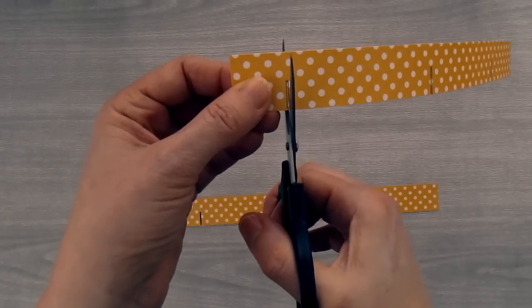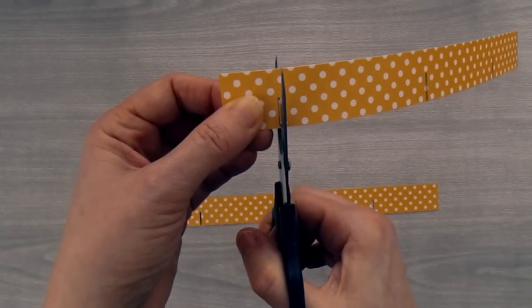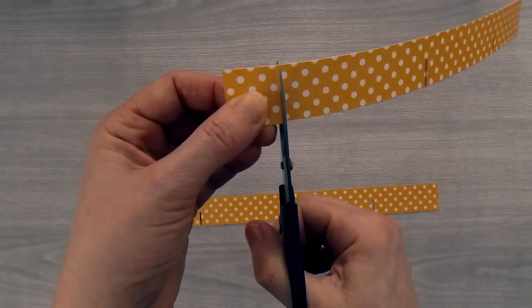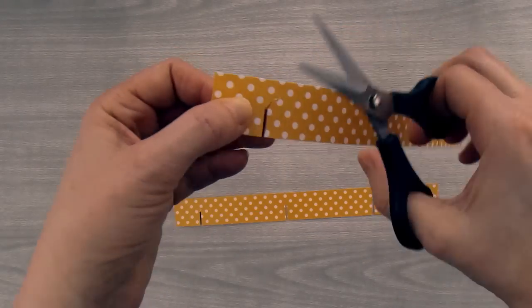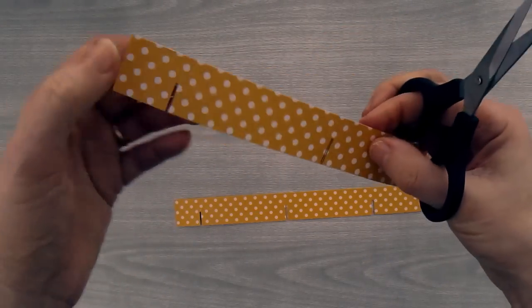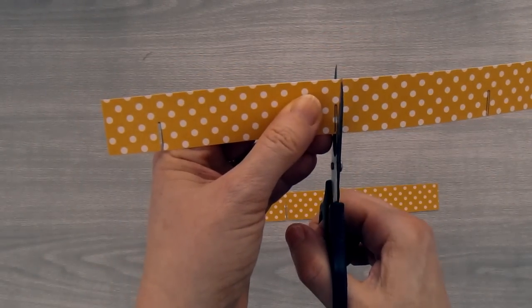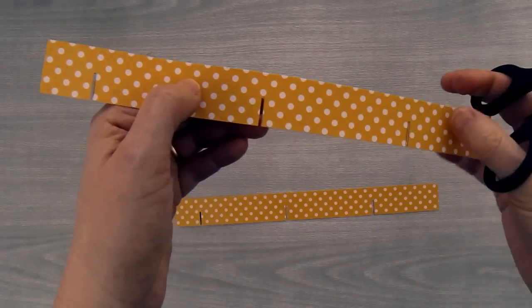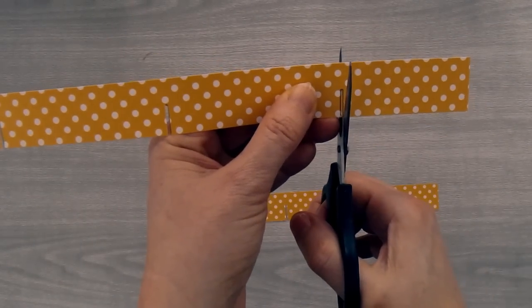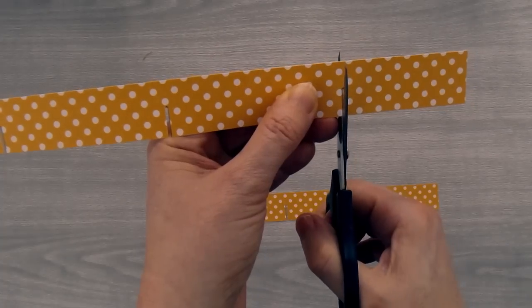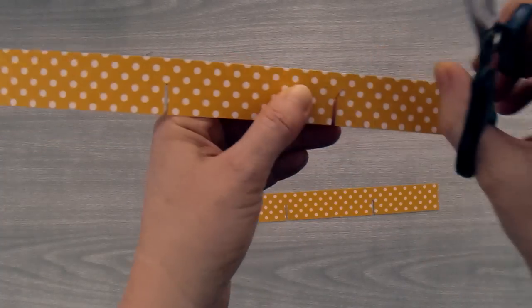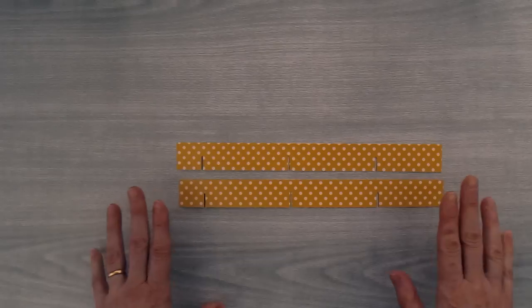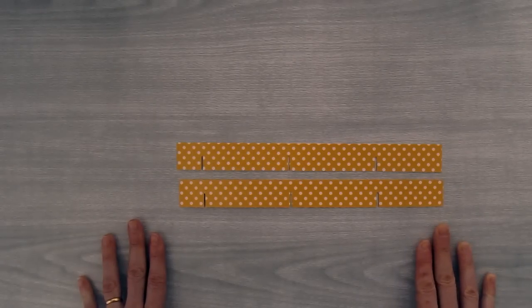Let's do the same for the other designer series paper piece. Cut along the pencil lines, then cut away this piece one more time. So here are the two strips, now we just need to fold them.